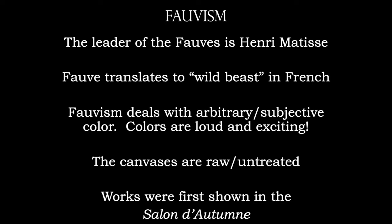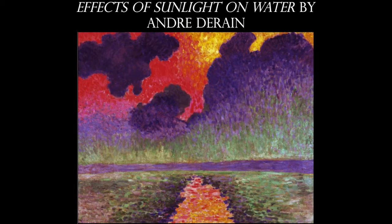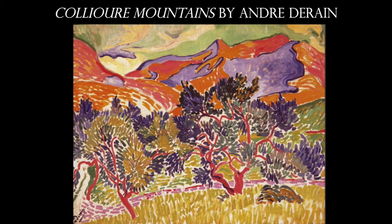With Fauvism, artists can use any color they choose — arbitrary color, first seen in Cézanne's work. The canvases are raw and untreated, meaning they're not first primed with gesso. The works were first shown at the Salon d'Automne in 1903 — the Fall Salon. The regular salon, like the Salon of 1863, takes place in the springtime. Derain was one of the other famous painters in the group, but Matisse is by far the most prominent figure in the history books.